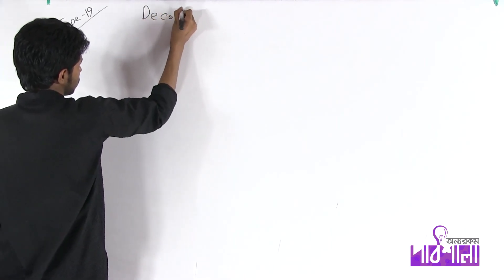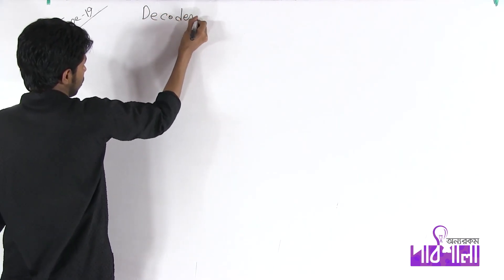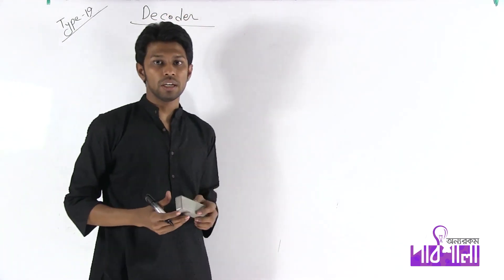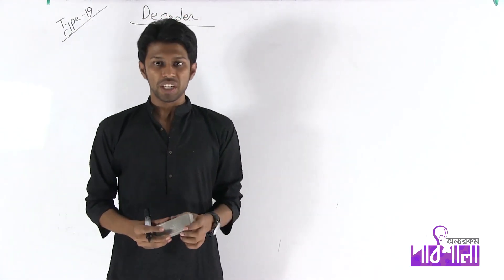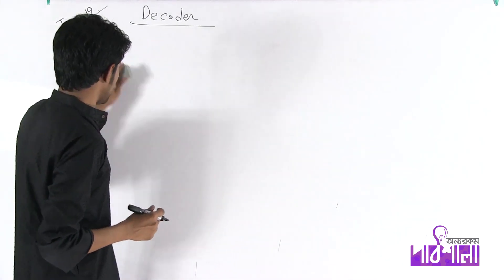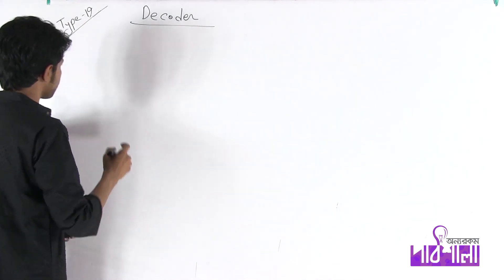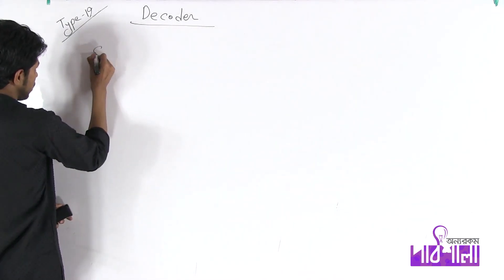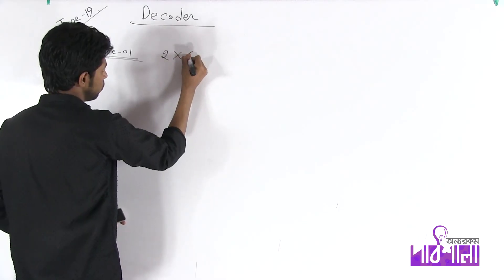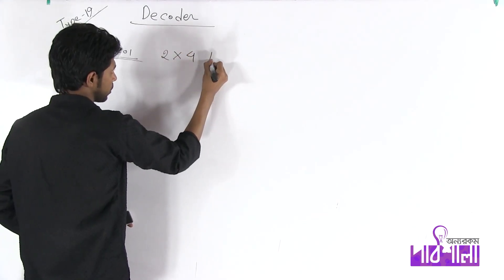Decoder is the same as the encoder, and the decoder is the same as the human being. So first, we have to do this. Case 1: 2-into-4 decoder.